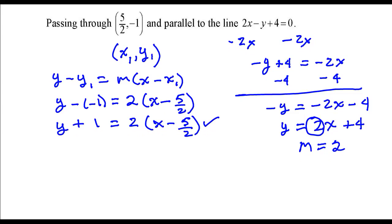Next, I'm going to write the general form of this line. So let me distribute this 2 to the terms inside parentheses here. So this is going to be 2 times x minus 2 times 5 over 2. So I can simplify this a little bit.